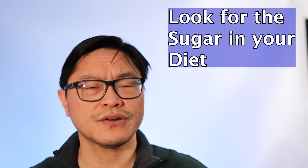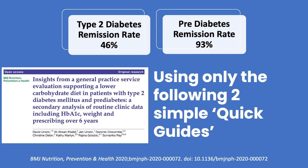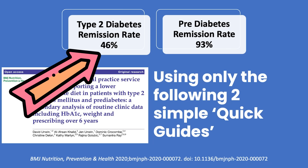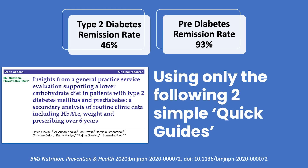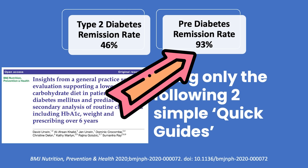Using this very simple approach, Dr. David Unwin in the United Kingdom showed that providing this advice could put type 2 diabetes into remission 46% of the time — getting people off all their medications and lowering their sugars to the point they would no longer be considered diabetic in almost half of his patients. If they only had pre-diabetes, he could normalize it in 93% of cases. That's astounding — the amazing power of diet on this dietary disease.